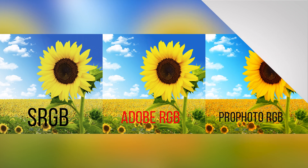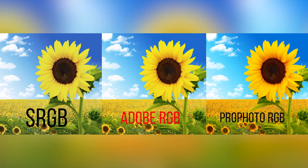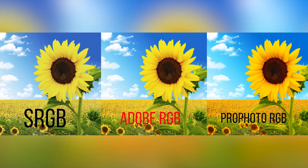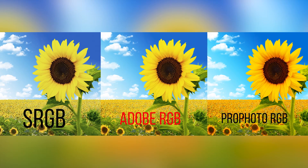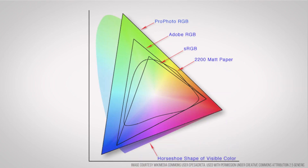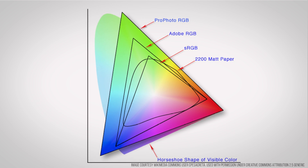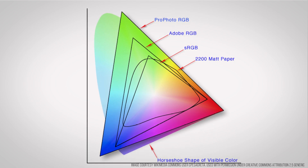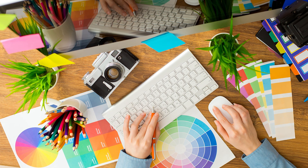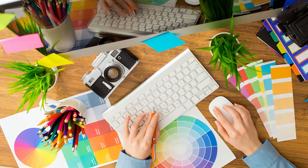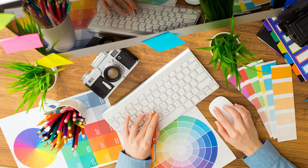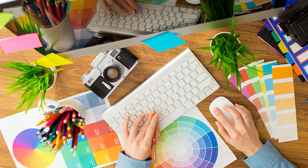But higher-end monitors sometimes support other color spaces such as Adobe RGB, which you'll see on spec sheets if you're going for a professional-grade display aimed at graphic designers. Although Adobe RGB supports the same number of colors as sRGB, the color space is a bit more spread out, meaning Adobe RGB is popular with designers who need to work with purer colors that can be more heavily saturated.